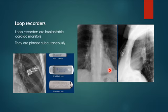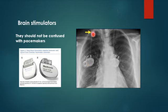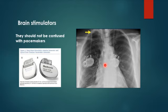This next device resembles a cardiac pacemaker but is actually a brain stimulator, used in patients with Parkinson's disease. It has two leads or wires directed subcutaneously under the skin of the neck and then into the brain — specifically the basal ganglia. When you see two devices with wires going up to the neck, this is not a pacemaker. The wires are not directed toward the heart but toward the brain, so you should take further history from the patient.